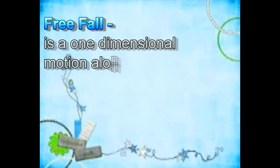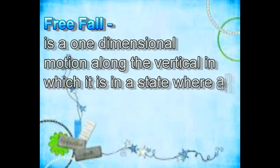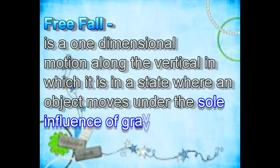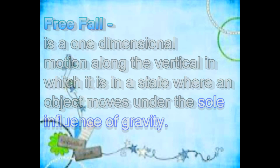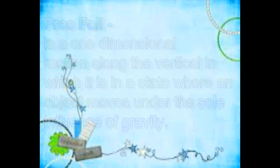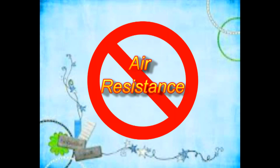Now that we know vertical motion, let us define freefall. Freefall is a one-dimensional motion along the vertical in which the object moves under the sole influence of gravity, meaning there is no air resistance acting on it.